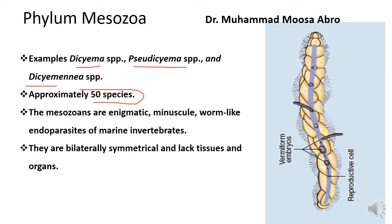These organisms are minuscule, worm-like endoparasites and marine invertebrate endoparasites. Their body shape shows bilateral symmetry, but they lack tissue and organs — no tissues at all. They almost resemble flatworms or flat animals, but truly they are not.